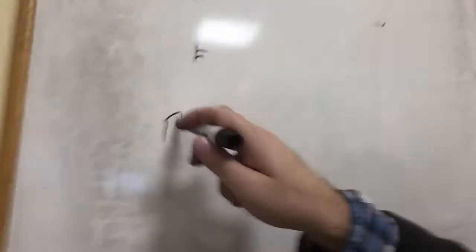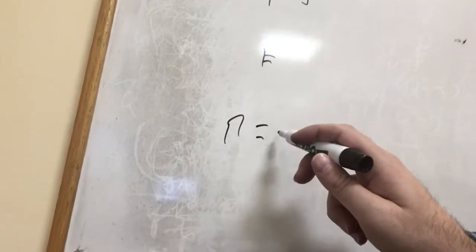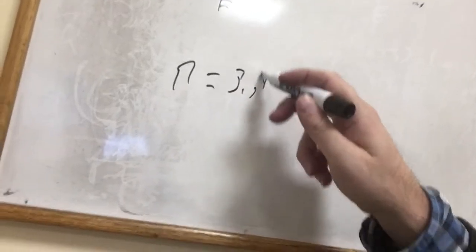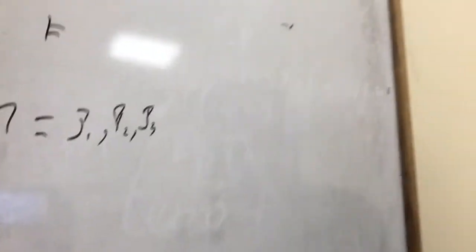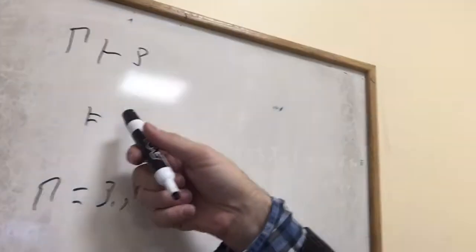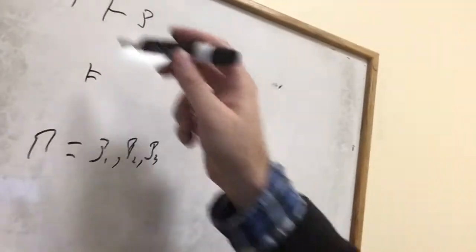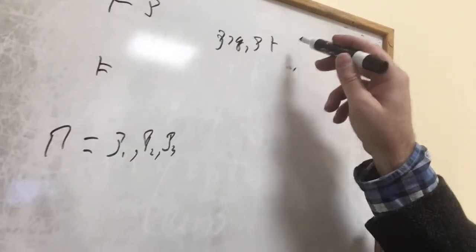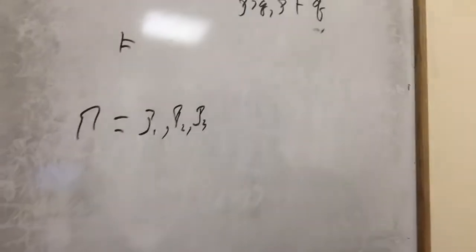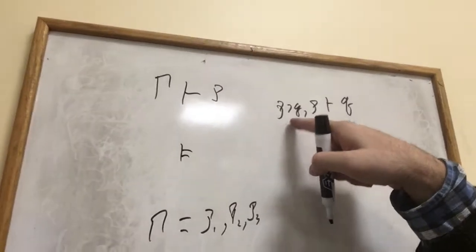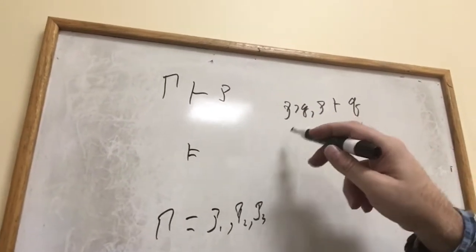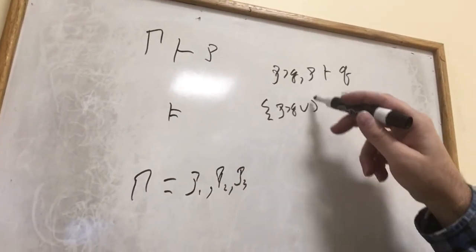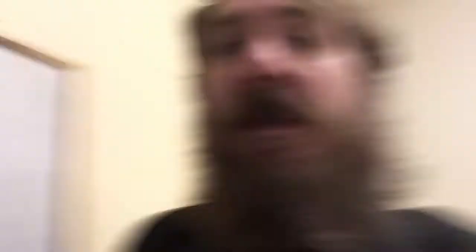If we wanted to say that gamma implies some sentence P, we can use gamma to stand for some set of premises — P1, P2, P3, etc. In a typical case, this might be modus ponens: from the set {P⊃Q} and P, we can infer Q. So gamma here would be P⊃Q and P, and sometimes people write that as the union of those things.